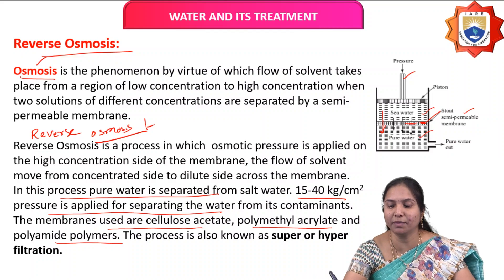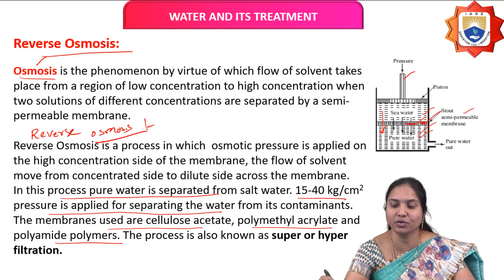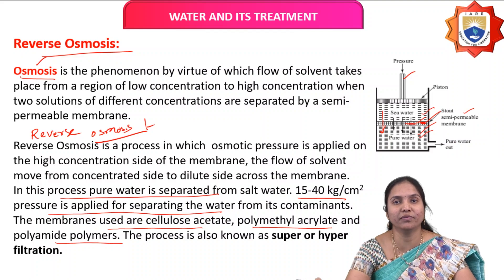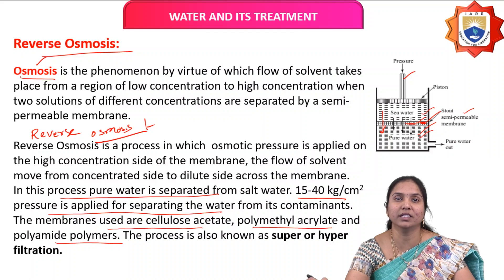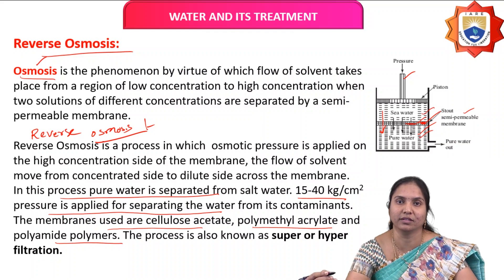The membrane is made of cellulose acetate, cellulose butyrate, or cellulose acrylate. This process is also called hyperfiltration, superfiltration, or electrodialysis, and it is commonly used in water purification systems like Aquaguard, etc.